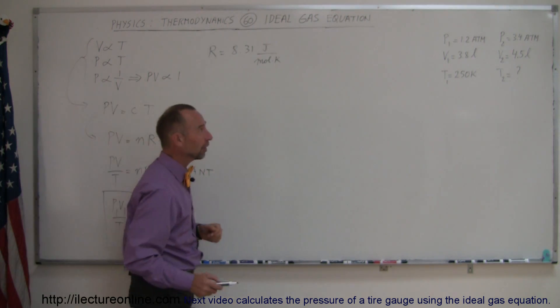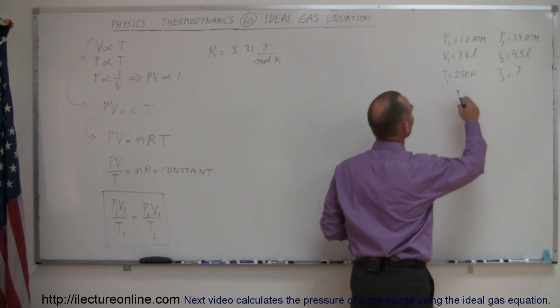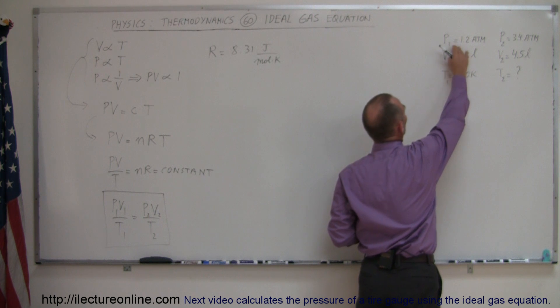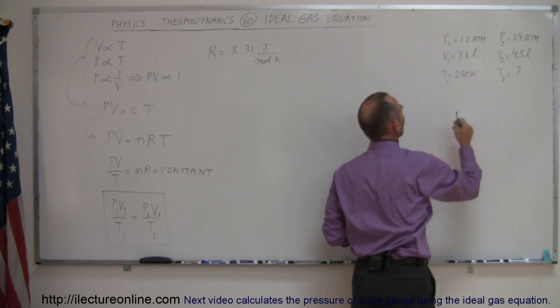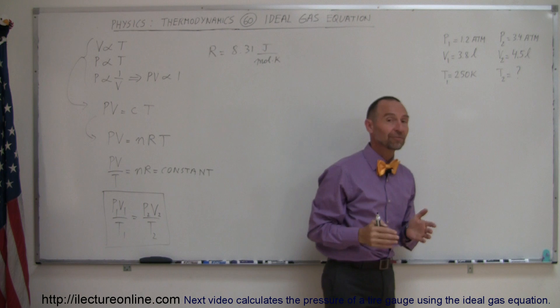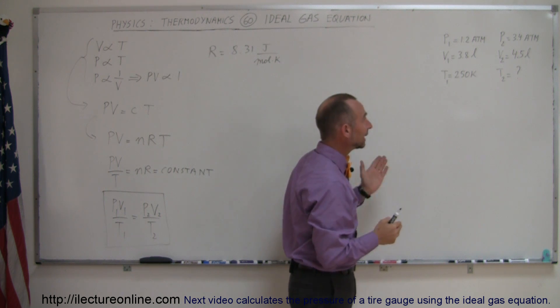So here's a quick example for us. Here we have a gas that has atmospheric pressure of 1.2 atmosphere, a volume of 3.8 liters, and a temperature of 250 K initially, and then it changes.